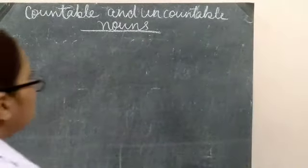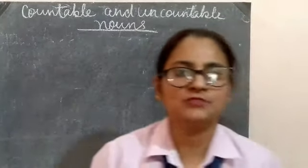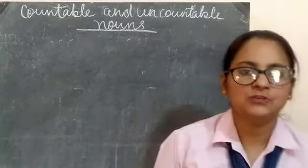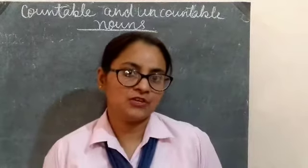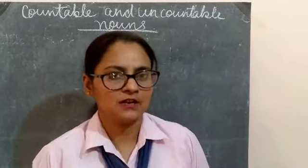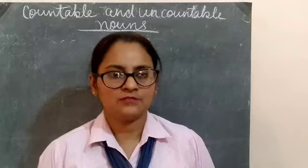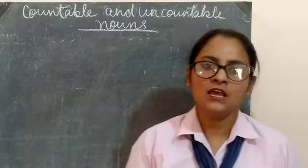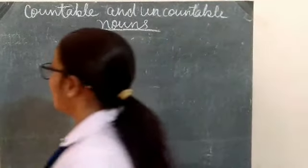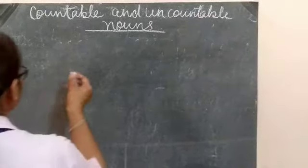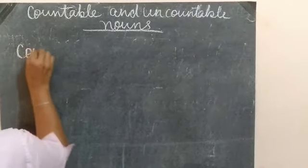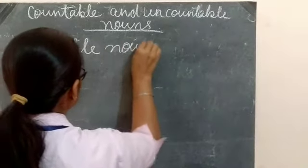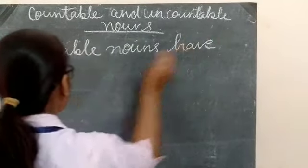So first, what is a countable noun? Things that can be counted are called countable nouns — like chair, pencil, book. We can count them. There are 3 books, there are 2 books, there is 1 pencil. So we can count these nouns. Countable nouns have plural forms.